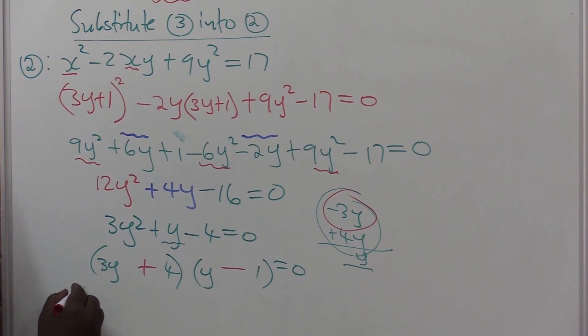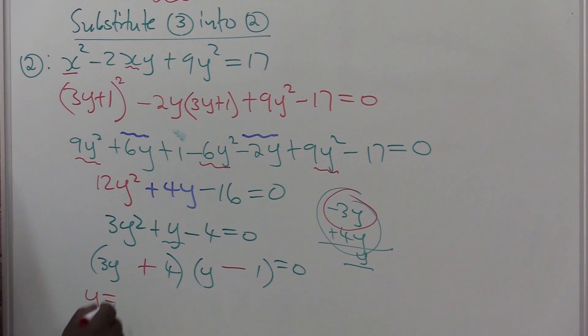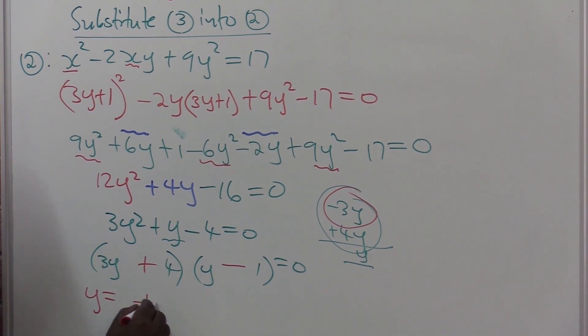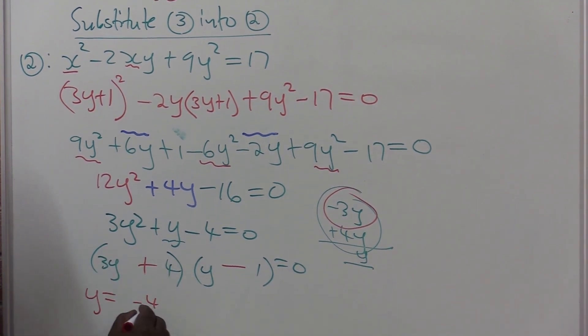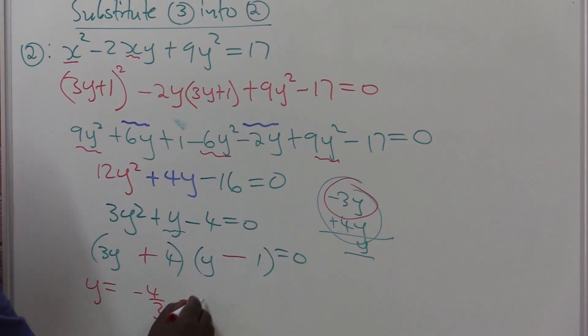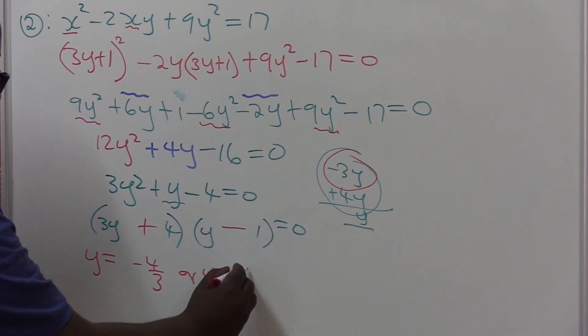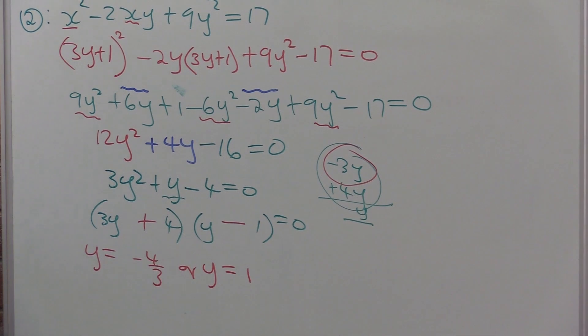Then, eventually, y will be equal to minus 4 over 3, or y equals 1 in this particular case.